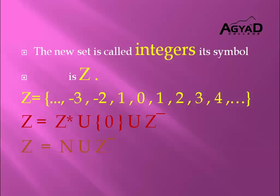Integers are represented by the symbol Z. Z consists of three sets of numbers: the set of positive numbers, called Z positive; the set of negative numbers, called Z negative; and the set containing 0. The set of negative numbers represents all numbers below 0, below sea level, or below the ground.